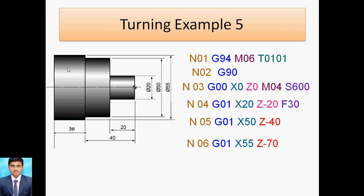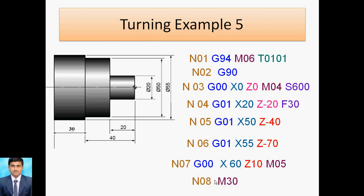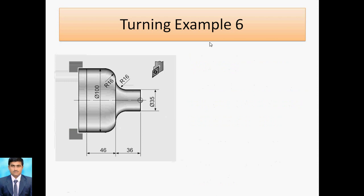Now the tool traverses away from the workpiece using rapid traverse G00. X60 — final diameter 55 plus offset — and Z10 positive. Then spindle stop M05 and program end M30. Always remember that N is the sequence or block number. This is example five.